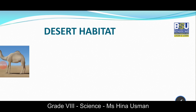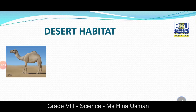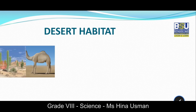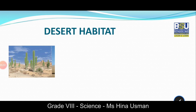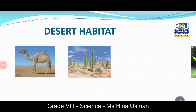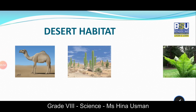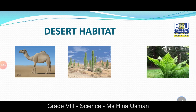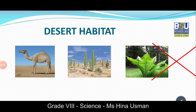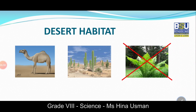Talking about adaptations — if we consider a desert habitat, not all plants and animals can survive there. To survive in deserts where the environment is hot and dry with a limited supply of water, plants and animals have to adapt. For instance, camels live in deserts because they can go without water for weeks. They store water in their stomach and have a hump to store fats. They also have thick eyelashes to withstand sandstorms.